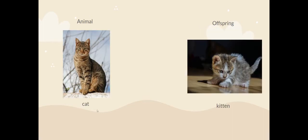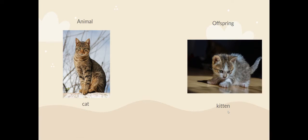A cat's offspring is called a kitten. What can you see the same and different about those? I think kittens just look like much smaller cats. They look very similar.